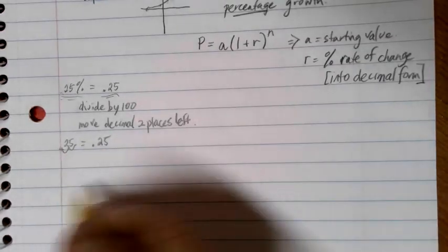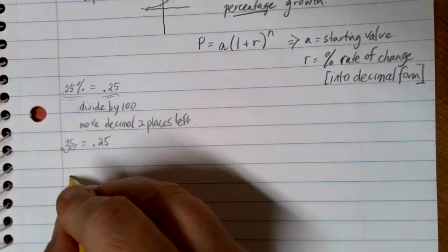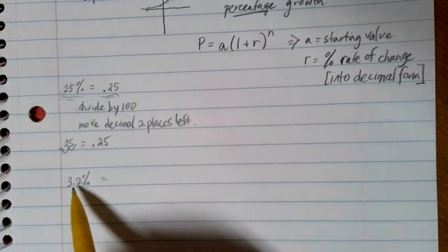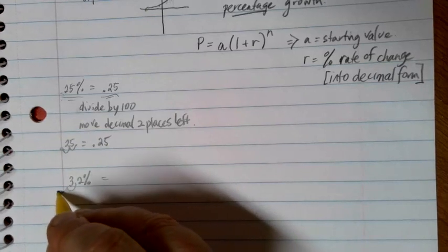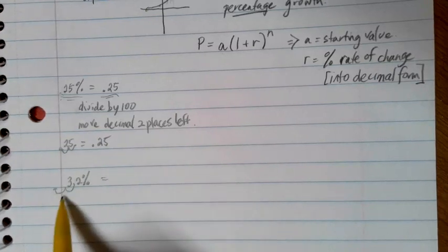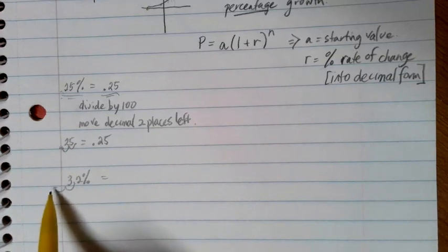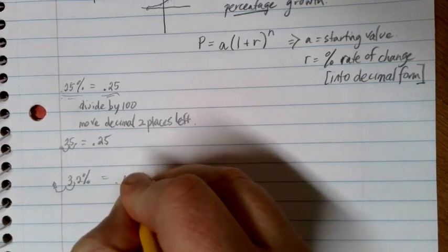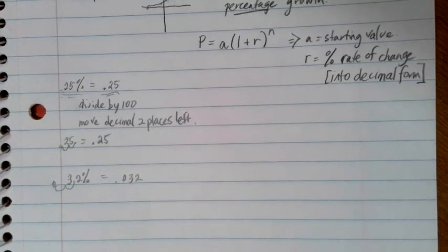Let's suppose that we have something like 3.2%. If I want to write it in its decimal form, I can either divide it by 100, or I can move the decimal two places to the left. Now, if you notice, there's only one place, and then it's kind of blank. We have to put a zero there because this is where the decimal place is. So 3.2% is 0.032 when we move the decimal two places to the left.